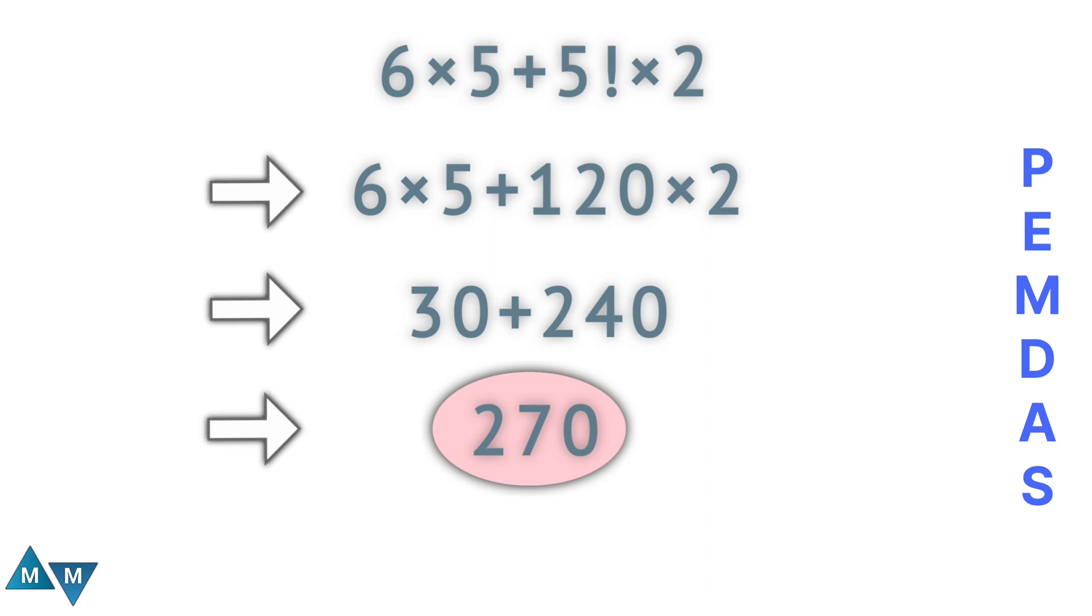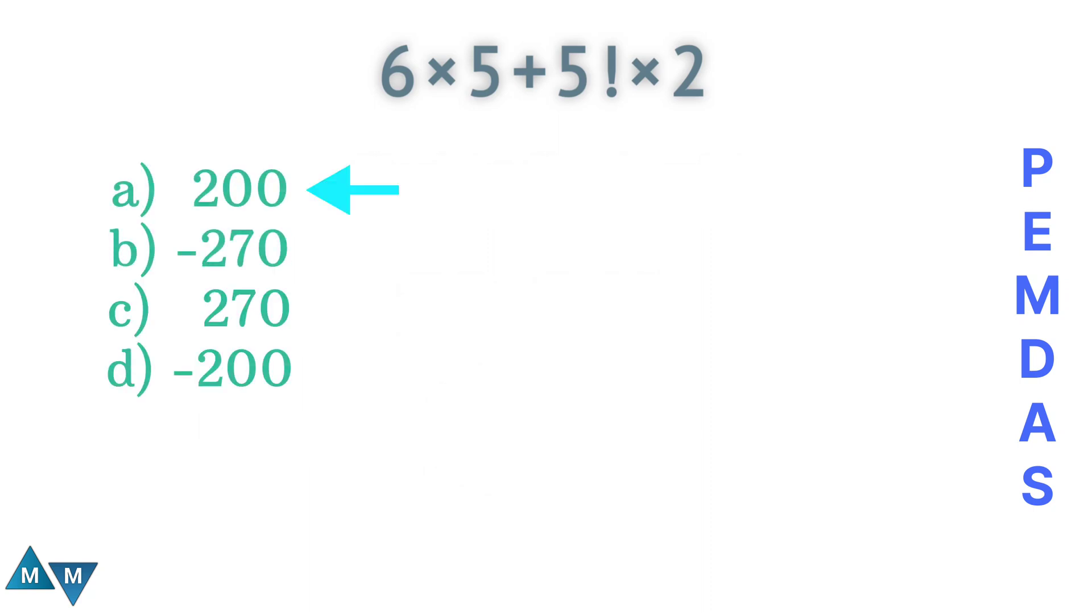Look at the options. The first one, 200, is incorrect. The second one is minus 270, which is also incorrect because our answer is a positive number. The third one is 270. So option C will be our final answer.